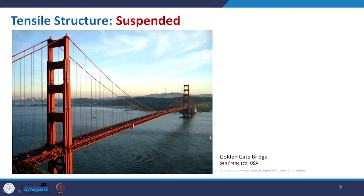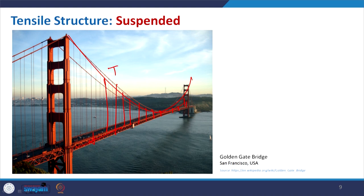Coming to the suspended one: we started with the Golden Gate Bridge image and here is another image where vertical members give support but the main support is given by the main cable which is in tension. All these tensile cables are taking care of the tensile force generated in this particular bridge. The load — whenever there is some imposed load — puts pressure on the structure and that is taken care of by the cable which is suspended from a running cable.